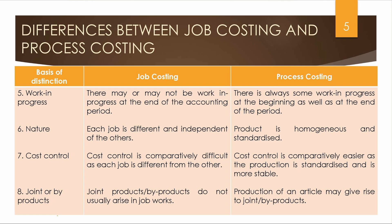Next is cost control. In job costing, cost control is comparatively difficult as each job is different. In process costing, cost control is comparatively easier as the production is standardized and more stable — a standard can be fixed and costs compared.